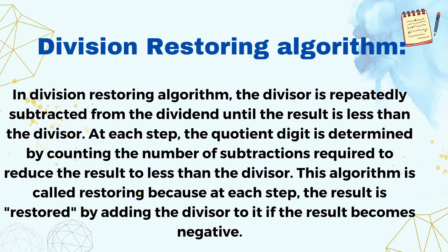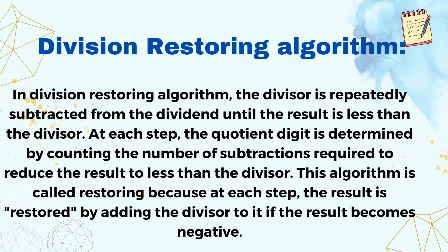Hello everyone, this is roll number 19. In the Division Restoring Algorithm, the divisor is repeatedly subtracted from the dividend until the result is less than the divisor. At each step, the quotient digit is determined by counting the number of subtractions required to reduce the result below the divisor. This algorithm is called 'restoring' because at each step, the result is restored by adding the divisor back if the result becomes negative.